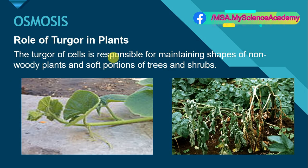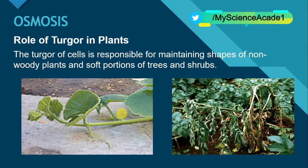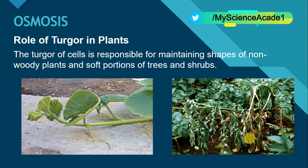Turgor pressure ki wajah se non-woody plants apni shape ko maintain rakhte hai, aur trees aur shrubs ke soft portions ki shape bhi is turgor pressure ki wajah se maintain hoti hai. When there is no turgor pressure, the leaves will become flaccid like this.